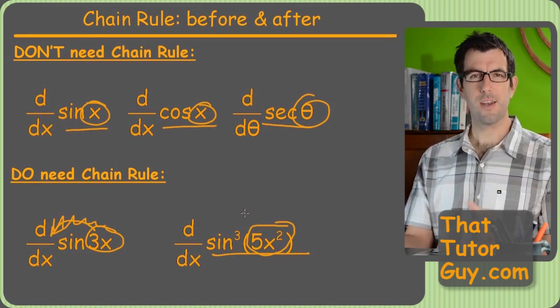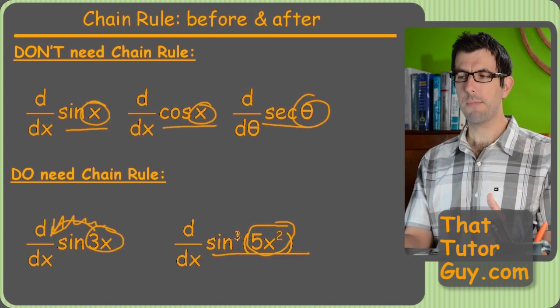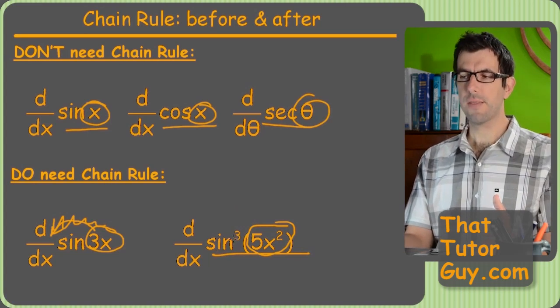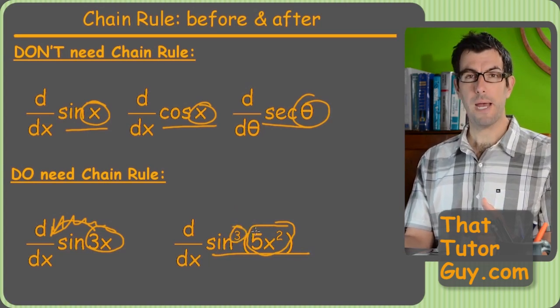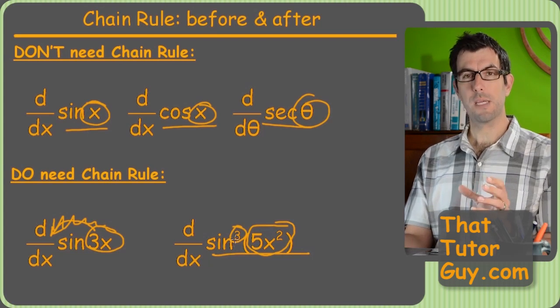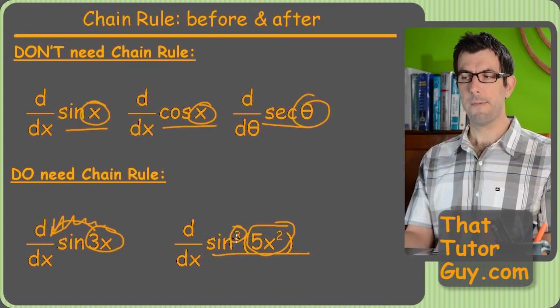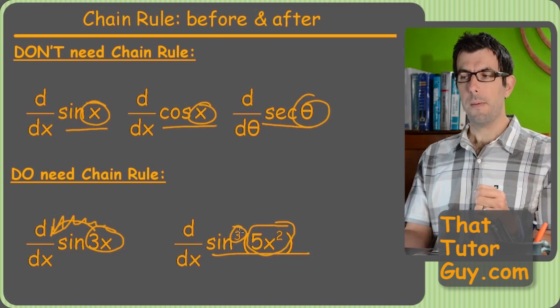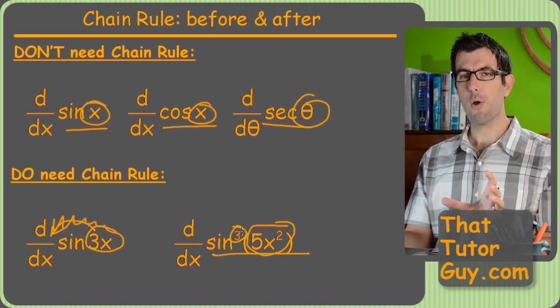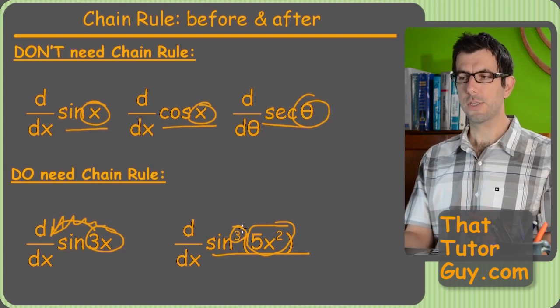But it turns out this isn't really a sine or cosine problem. This is really a power problem, because we've got the sine to the third power. Now these ones are a little bit confusing, so I'll bring it up now, and then of course we'll see it in a later video about trig functions and the chain rule. But this is really a power problem with a really fancy inside.